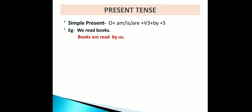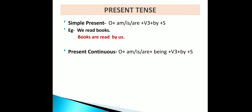For simple present tense, the passive structure is: object + am/is/are + verb (third form) + by + subject. Example: 'We read books' becomes 'Books are read by us.' For present continuous tense, use the given structure. Example: 'He is flying a kite' becomes 'A kite is being flown by him.'